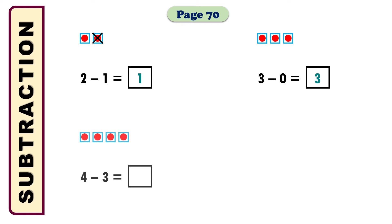In the next math we have 4 minus 3 equals what? For that we will take 4 boxes. Among the 4 boxes we will cross 3, because our math says minus 3. That's why we are going to cross 3 boxes among the 4. After crossing those boxes, only 1 box remains, so the answer will be 1. We have taken 4 boxes, crossed 3 among them, and only 1 box is remaining — that's why the answer is 1.